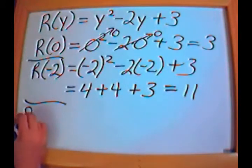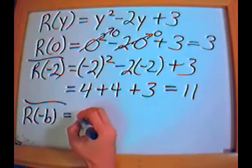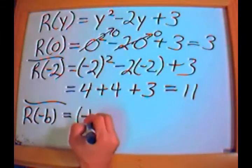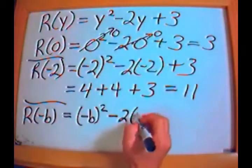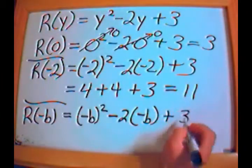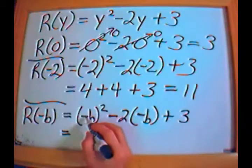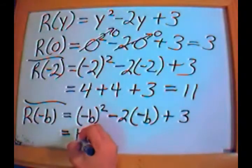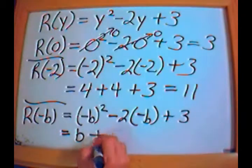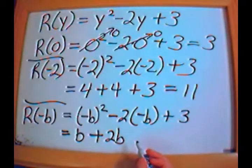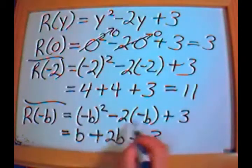Let's look at one final example. Let's say I have r of negative b. I plug negative b in for y: negative b squared minus 2 times negative b plus 3. Negative b times negative b is positive b squared. Negative 2 times negative b is positive 2b, because negative times negative is positive. So the result is b squared plus 2b plus 3.